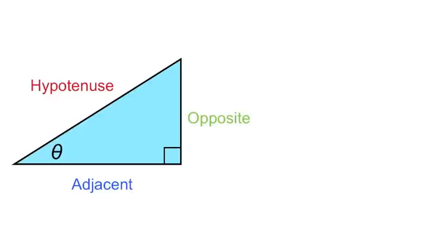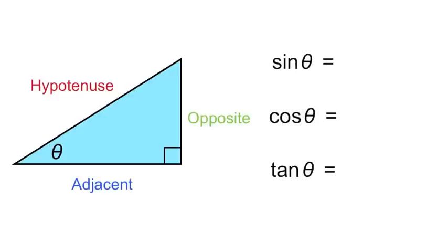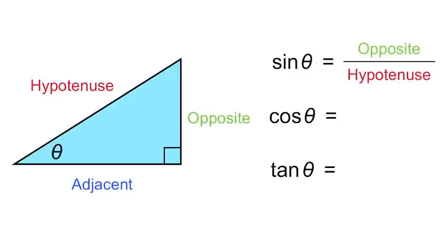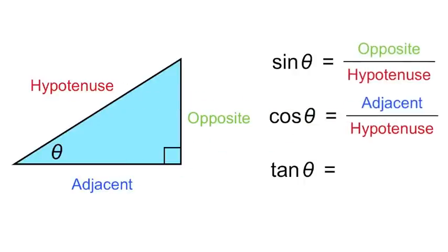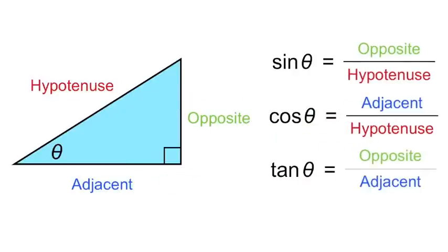Recall the definitions for sine, cosine, and tangent. Sine is opposite over hypotenuse, cosine is adjacent over hypotenuse, and tangent is opposite over adjacent.